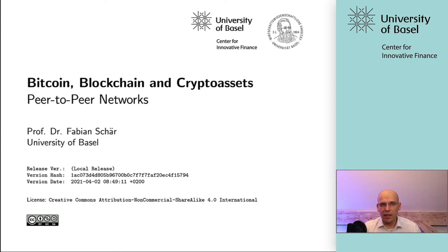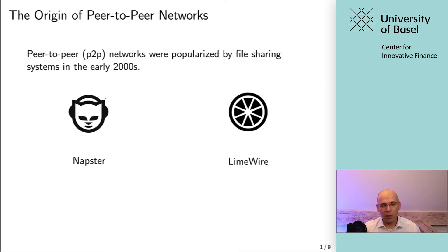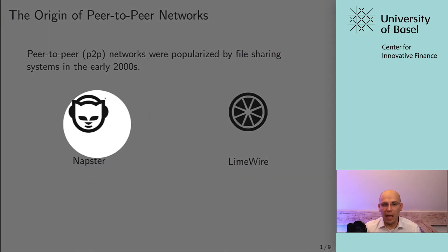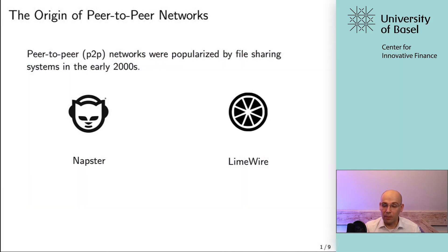The idea is that you have a network where everyone is equal, where you have no special privileges. And as you will see, blockchain isn't the first technology to employ that. There have been many examples of peer-to-peer networks throughout history. Two of the most prominent ones are Napster and LimeWire — peer-to-peer file sharing networks with the idea that you have audio files, music, videos, pretty much any media that could be shared over these networks.